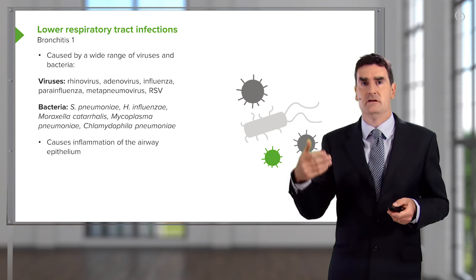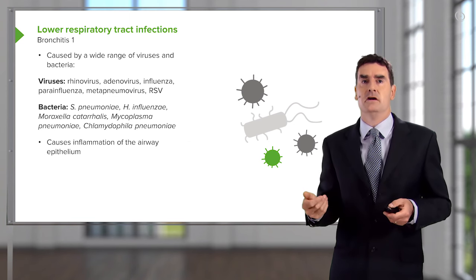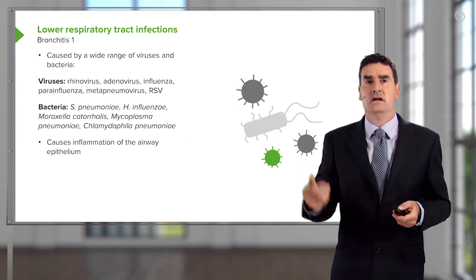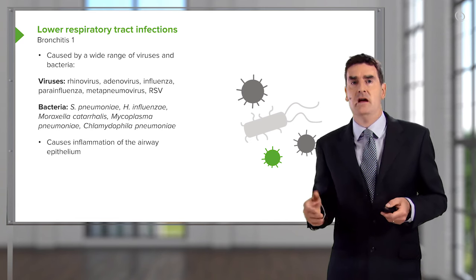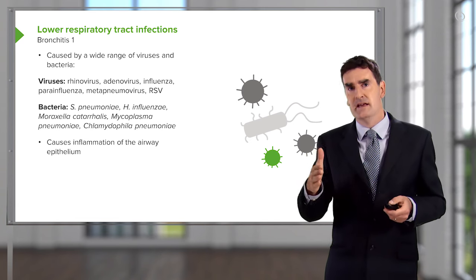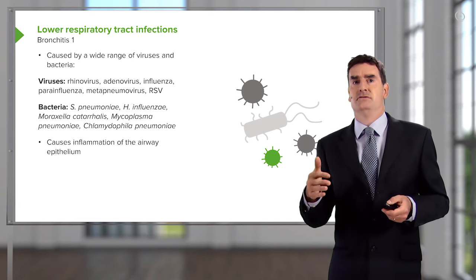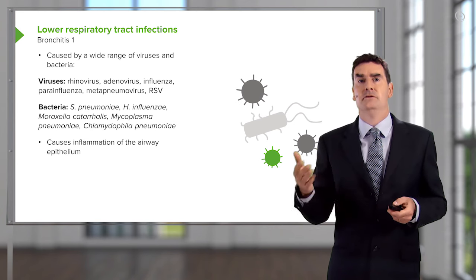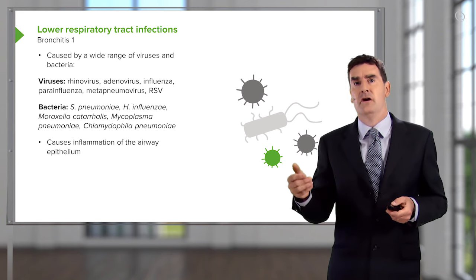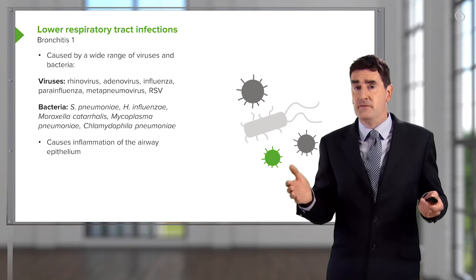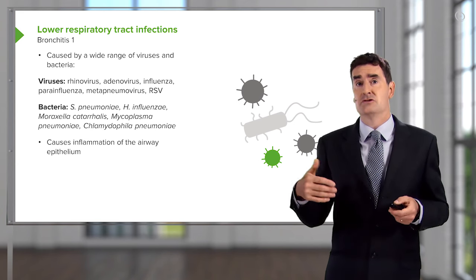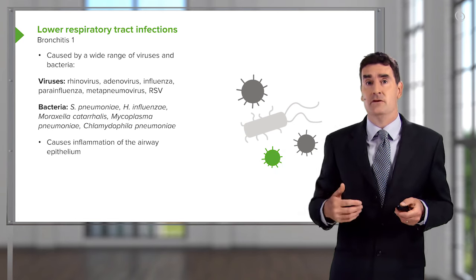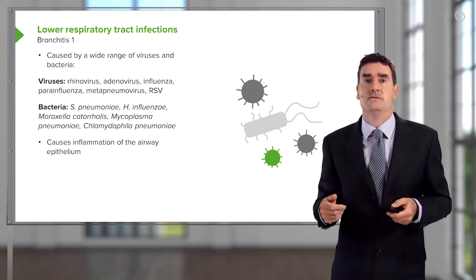The key bacterial pathogens include Pneumococcus, Haemophilus influenzae, and Moraxella catarrhalis. Then there are the atypical pathogens — Mycoplasma pneumoniae and Chlamydophila pneumoniae — which behave much more like a virus than a normal bacterial pathogen.